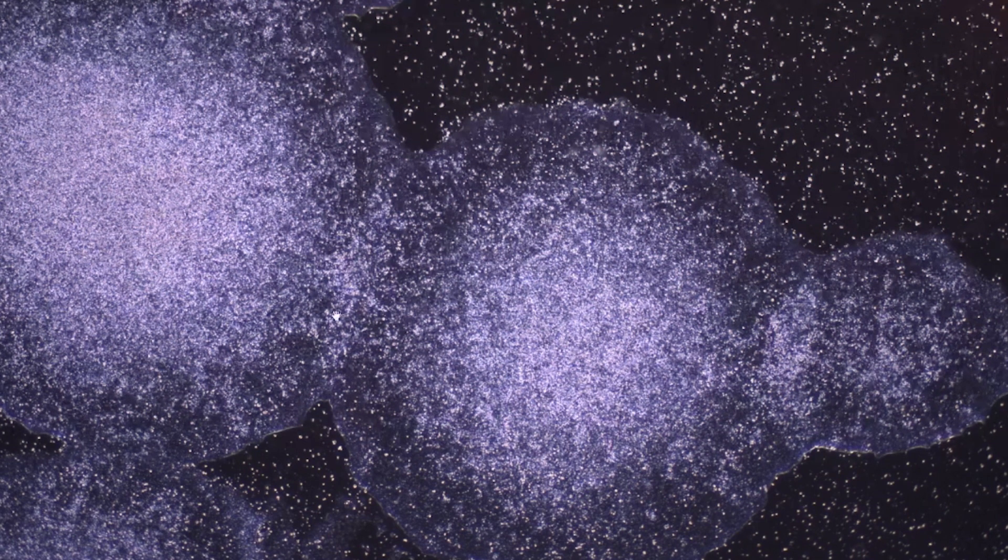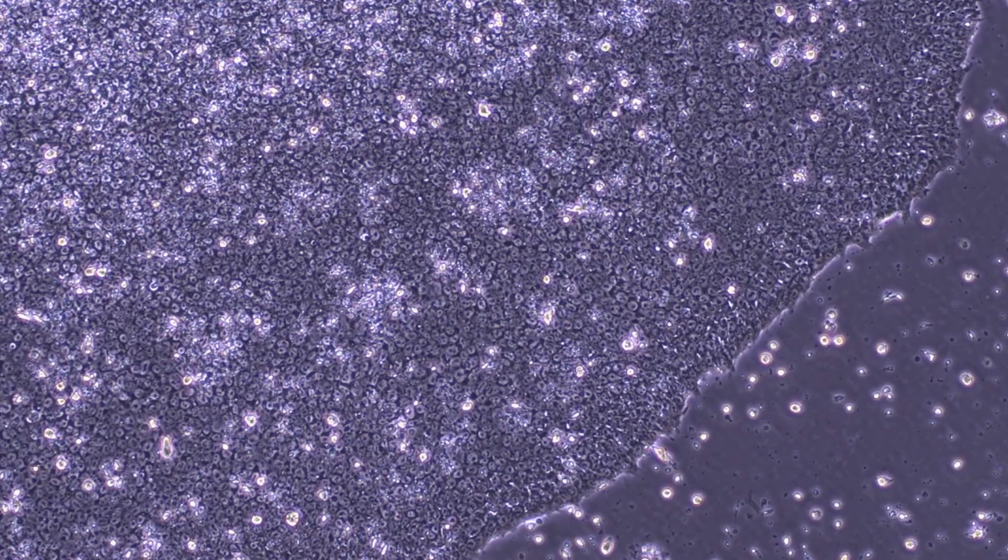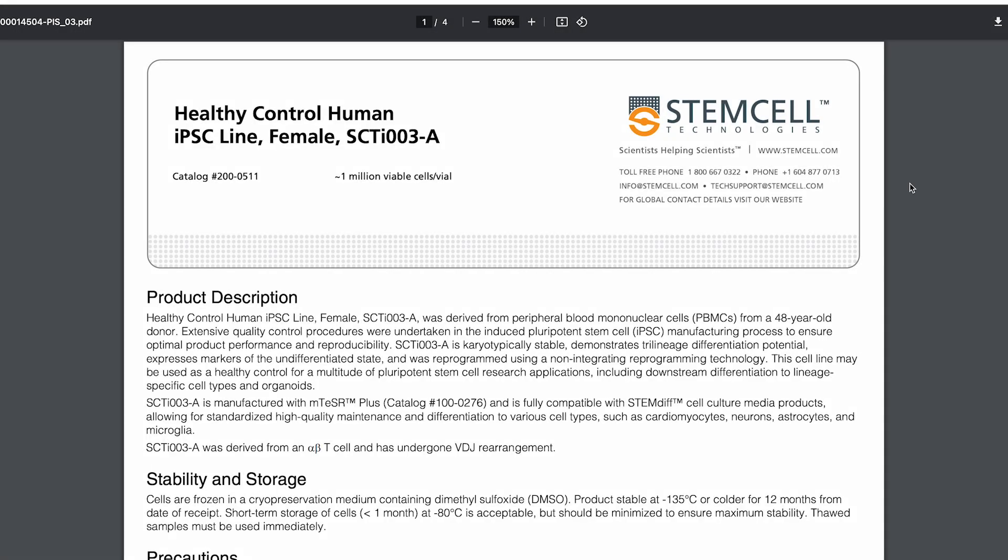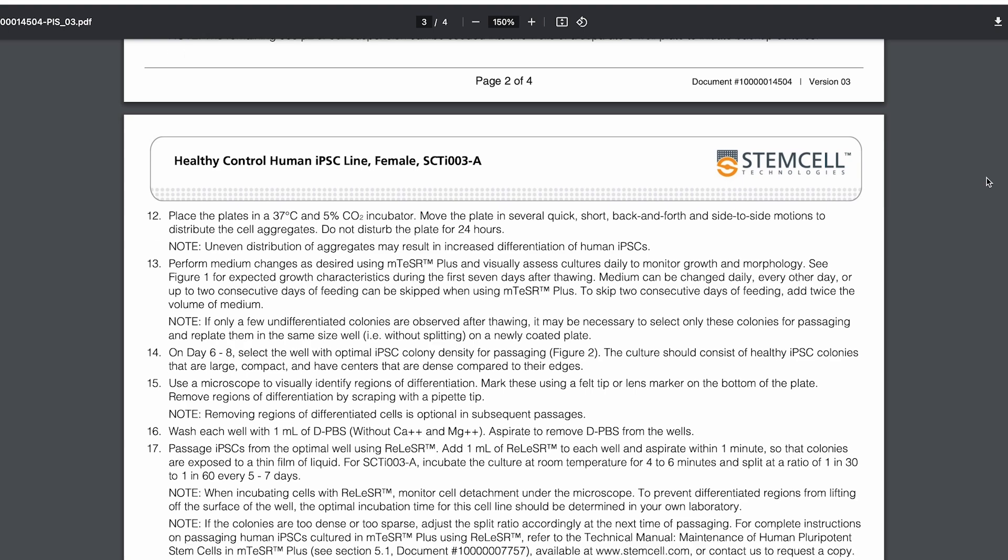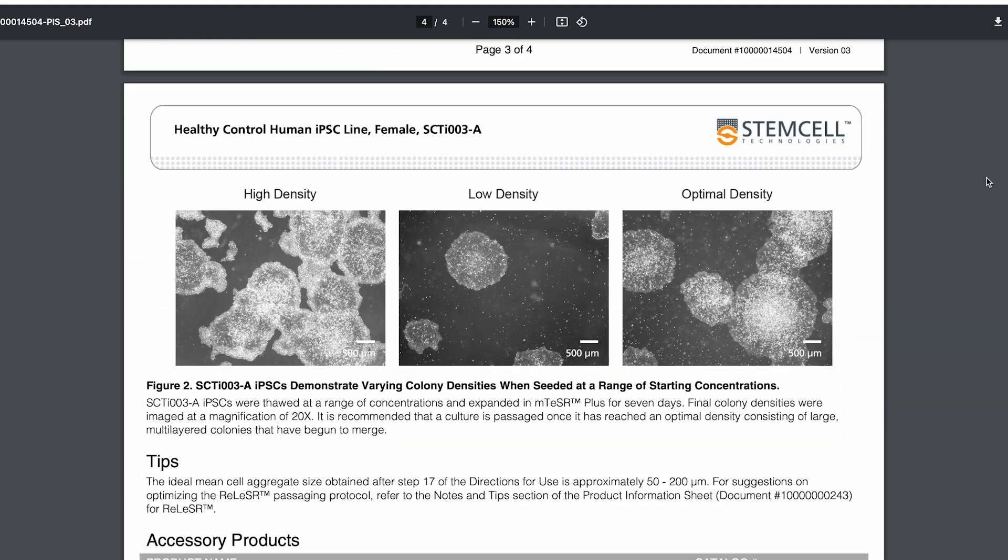Visually assess your cultures on a regular basis to monitor growth and morphology. This will help determine the optimal day to passage the cultures. For additional information on passaging or managing spontaneous differentiation in your cultures, please refer to the product information sheet relevant to the cell line you are using.